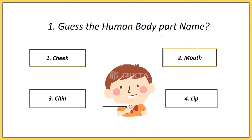First one. Guess the human body part name. Options: cheek, mouth, chin, lip. Answer is chin.